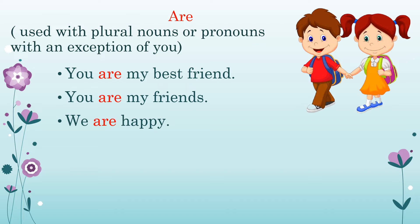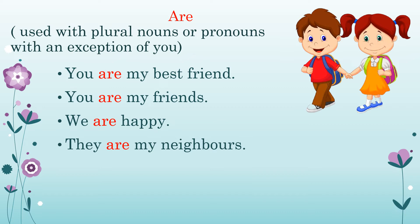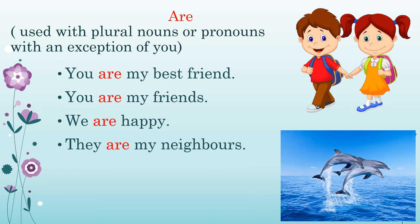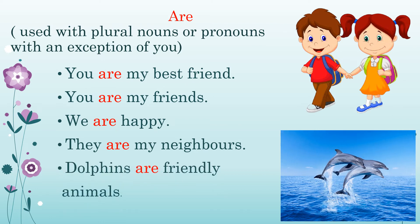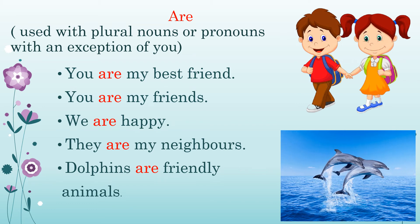We are happy. We is a pronoun used for more than one noun. They are my neighbors — they again is a pronoun used for more than one. Dolphins are friendly animals. Dolphins — not just one dolphin. If it was dolphin, we should write dolphin is a friendly animal. But here there are more than one, so dolphins. And which word do you use with more than one noun or pronoun? Are. Dolphins are friendly animals.